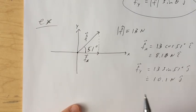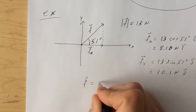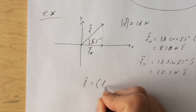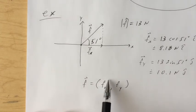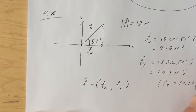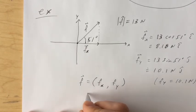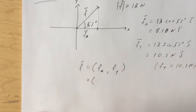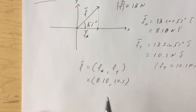Let's do an example. Say a force is applied at an angle of 51 degrees and the magnitude of F equals 13 newtons. The x-component Fx equals 13 times cosine of 51 degrees times i, which is approximately 8.18 newtons in the i direction. The y-component Fy equals 13 times sine of 51 degrees times j, which is approximately 10.1 newtons in the j direction. So F as a coordinate vector is approximately (8.2, 10.1).